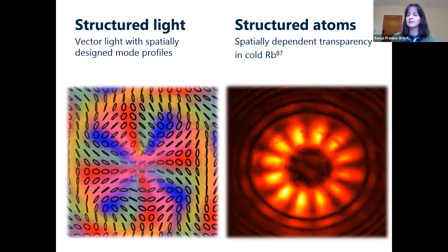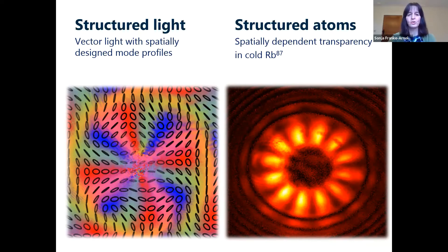What you see here is that this one light beam actually has different polarization components in it. The red bits are right-handed circular polarized, the blue ones are left-handed circular polarized, and the different ellipses show you exactly what you expect if you're familiar with polarization at all. So we can make these light beams; I'm going to explain the color scheme a little bit later on.